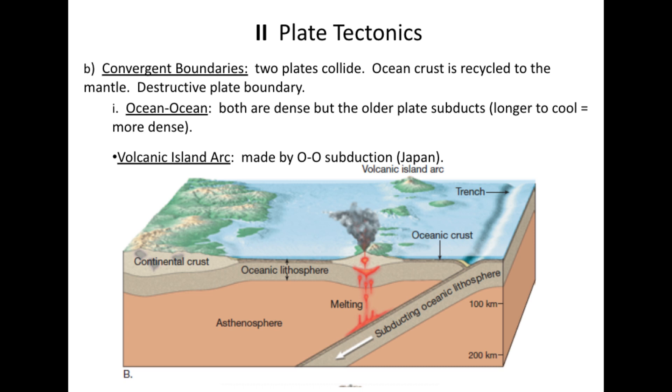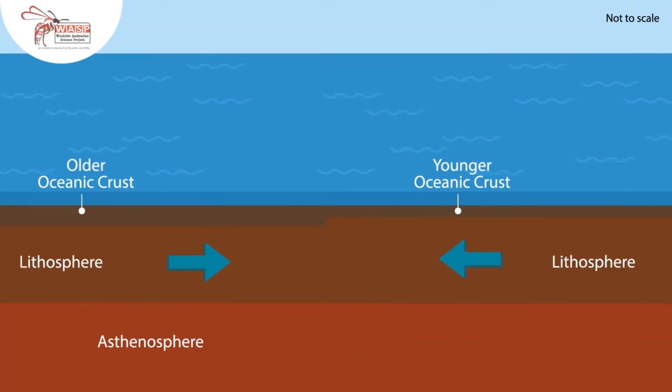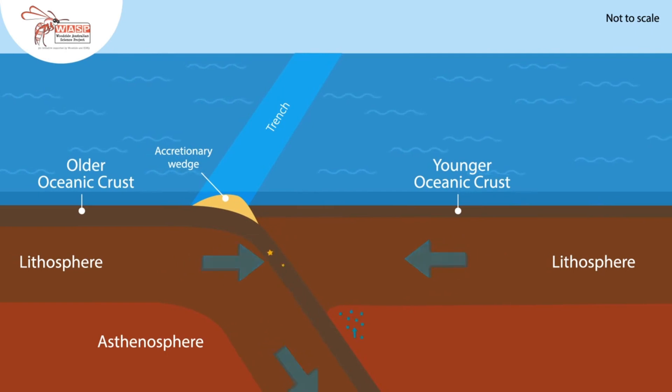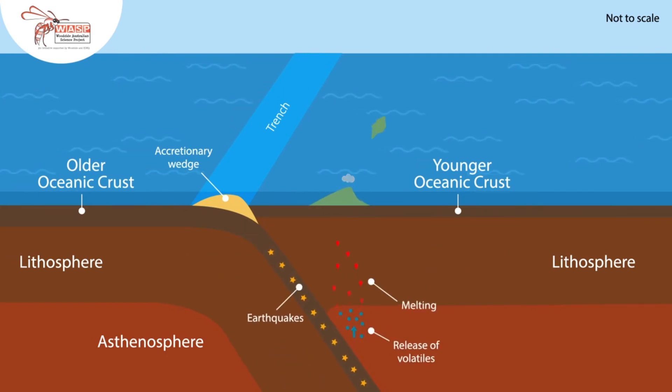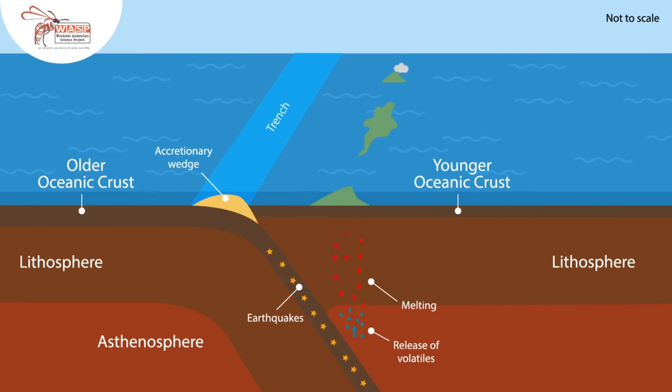Convergent boundaries occur when plates move together. Since there are two types of crust, there are several subtypes. The first is ocean-to-ocean convergence, where two pieces of ocean floor collide and one subducts. The one that subducts is always the older one — older ocean floor is colder, having had more time to contract and cool, making it more dense. When it subducts it causes melting in the mantle and produces a volcanic island arc. Japan is a classic example of this.